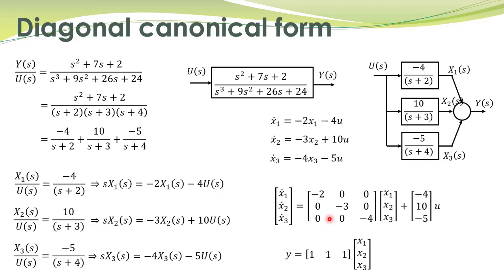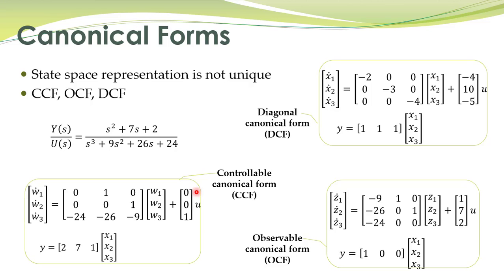This particular state space representation is called the diagonal canonical form. A more general representation is the Jordan canonical form, which we are not discussing here. When you have two eigenvalues at the same location — for example, if instead of −3 it were −2 — that would result in the system matrix being block diagonal. So we have learned how to obtain different canonical form representations: controllable canonical form, observable canonical form, and diagonal canonical form.